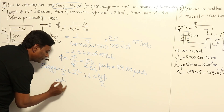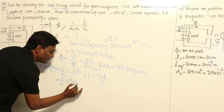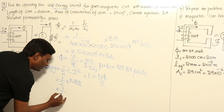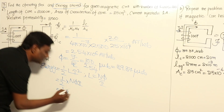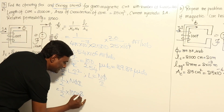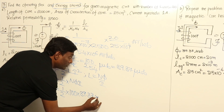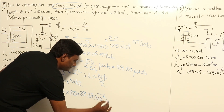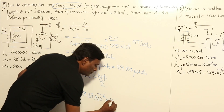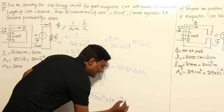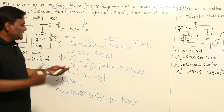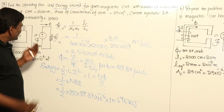Energy = ½ × N × Φ × I = ½ × 100 × 39.37 × 10⁻⁶ × 1 ampere, which comes to 1.96 millijoules. Now let us take the same problem and introduce a small air gap.